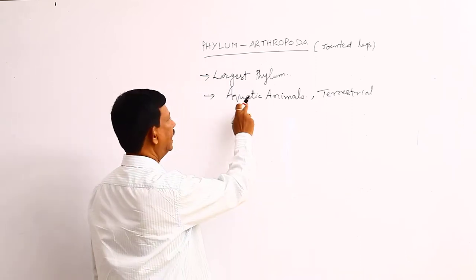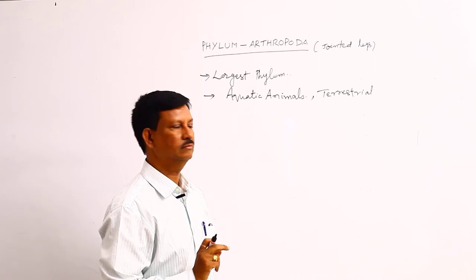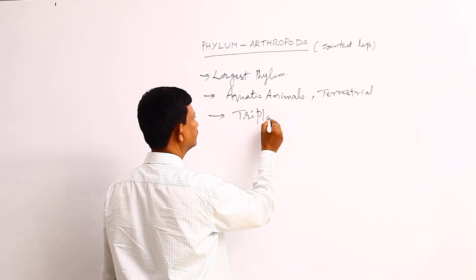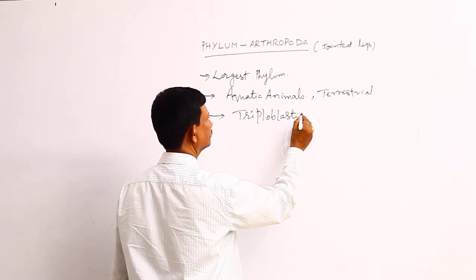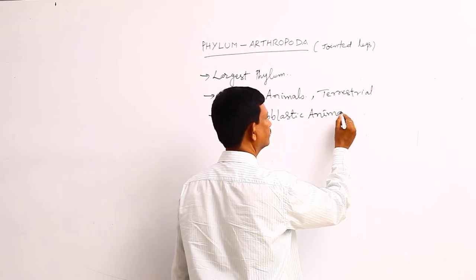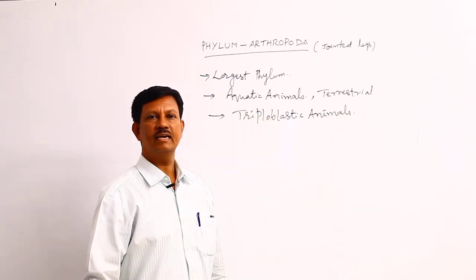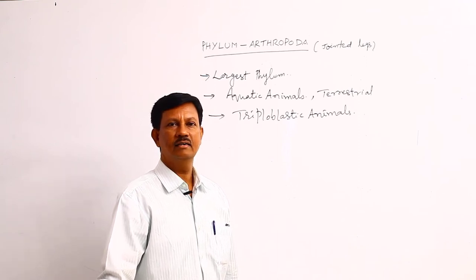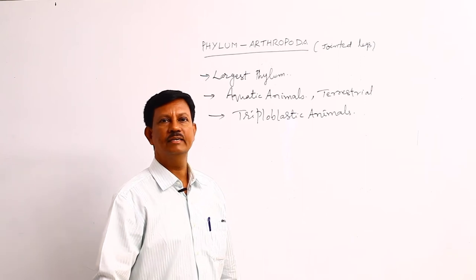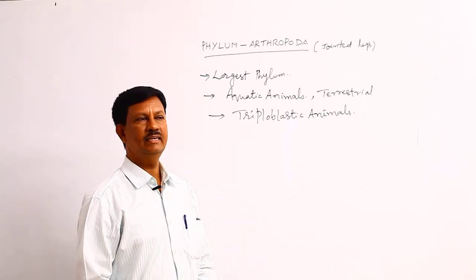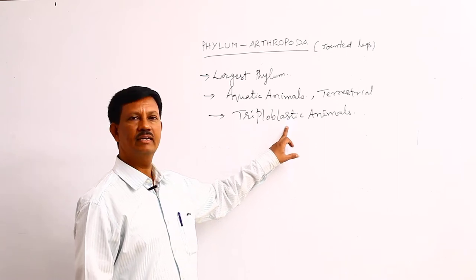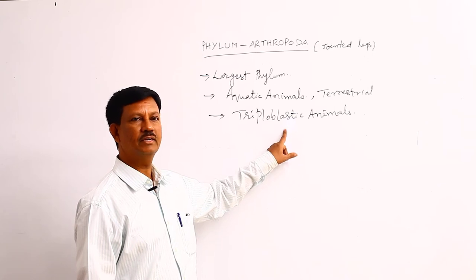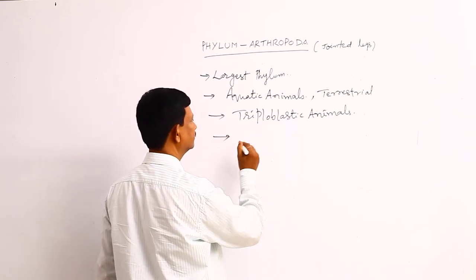These are triploblastic animals. Triploblastic animals means the presence of three primary germ layers in development. They are ectoderm, endoderm, and mesoderm. These three layers are present in the embryonic condition and gradually they develop into different systems of the body.